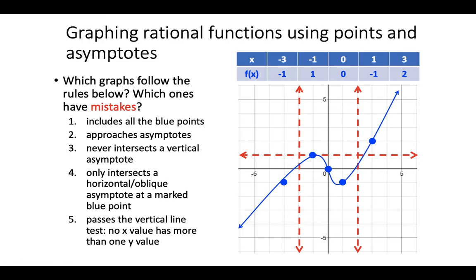A second proposed graph also violates the rules: the graph goes randomly without following asymptote behavior, crosses the vertical asymptote in multiple places, and intersects the horizontal asymptote at unmarked points. Simply connecting all given points is not the answer — you must maintain all the rules. The mistakes are: does not approach asymptotes, intersects the vertical asymptote, and intersects horizontal asymptote at wrong points.